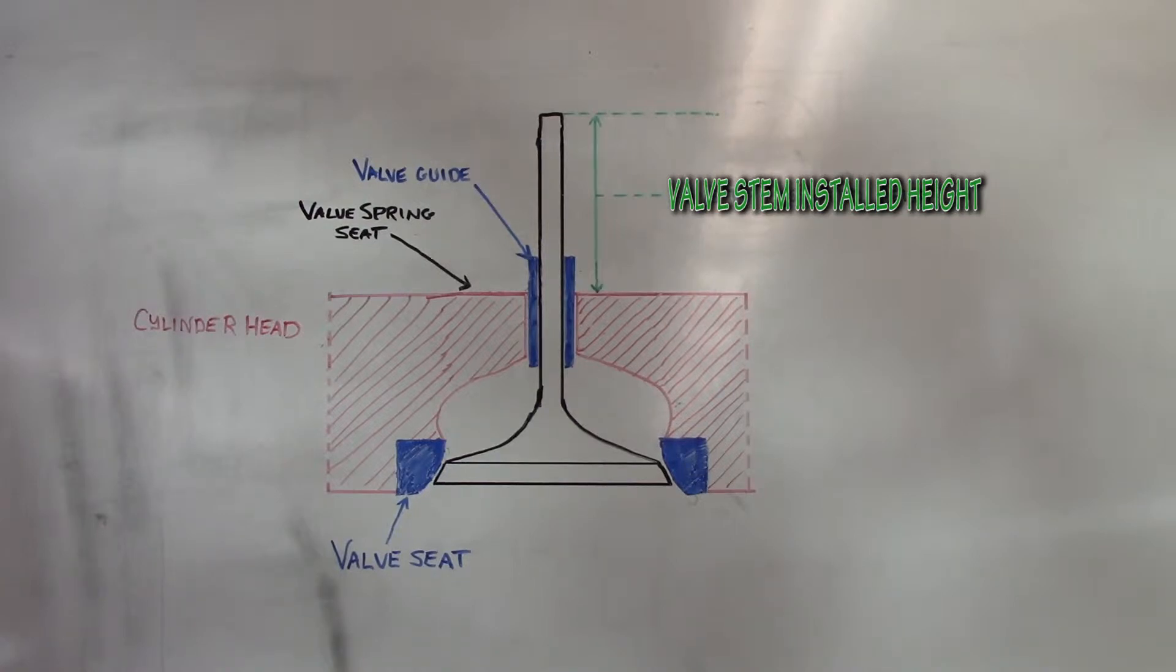Common causes of excessive valve stem installed height is a worn valve seat or a worn valve face. This causes the valve to travel further into the cylinder head when it is closed.